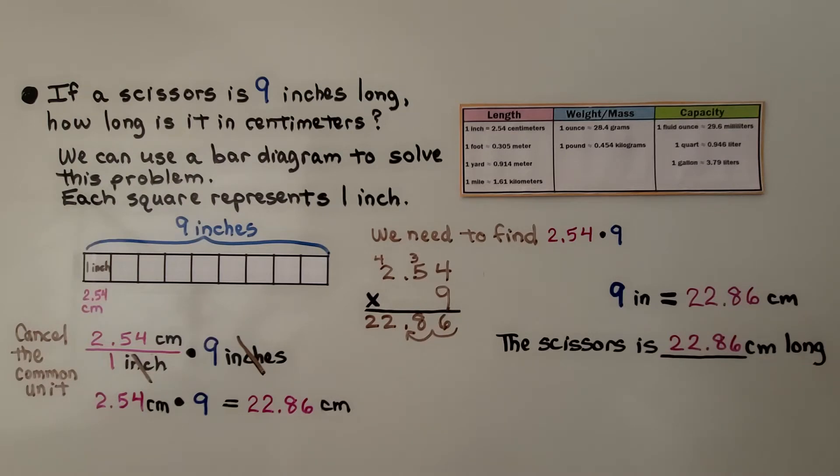If a scissors is 9 inches long, how long is it in centimeters? We can use a bar diagram to solve this problem. Each square represents 1 inch. We have 9 of them. And if 1 inch is equal to 2.54 centimeters, we're going to do 2.54 centimeters times 9.